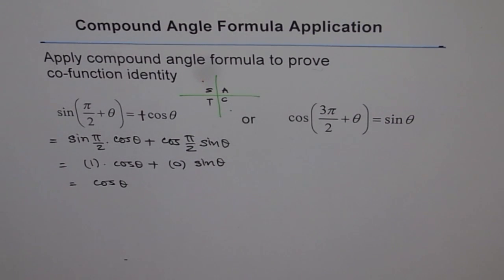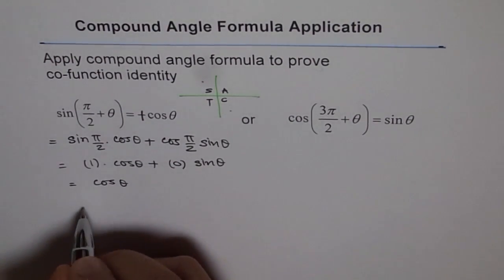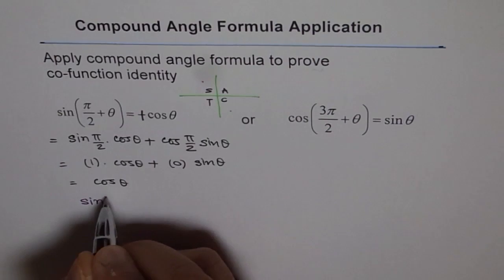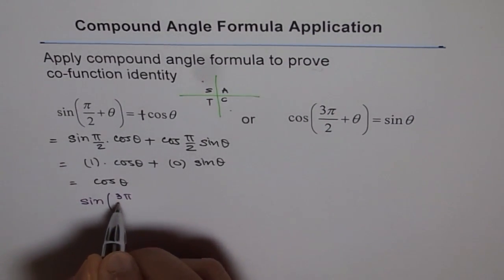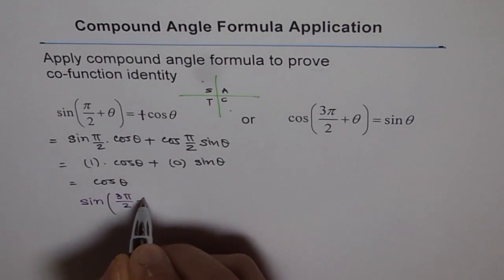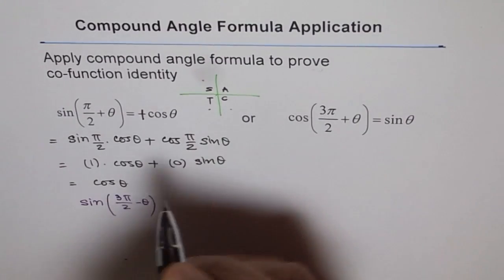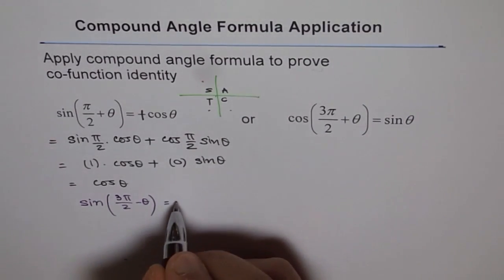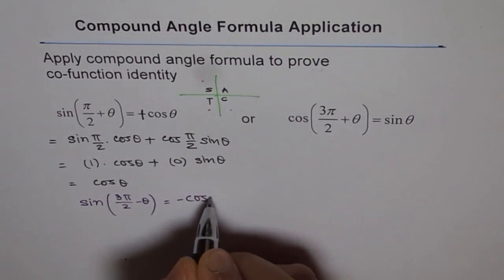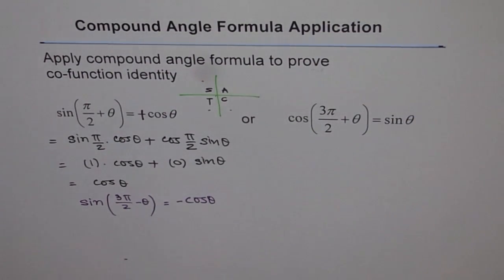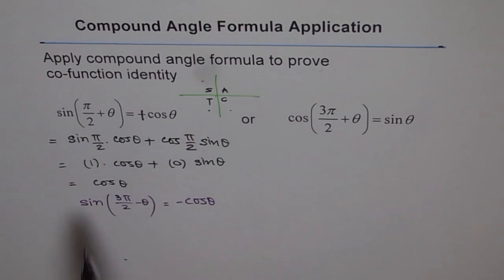Now let me add a practice question for you to try. Prove that sine of 3π/2 minus θ equals minus cos θ. In that case, 3π/2 places you on this side, and minus θ will bring you here. You can prove this yourself — just expand it using the compound angle formula and get your result. It is just that easy.